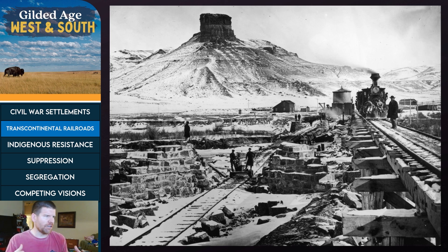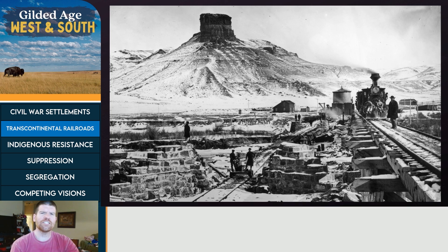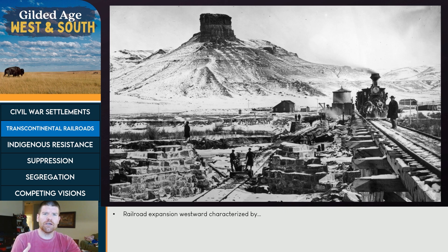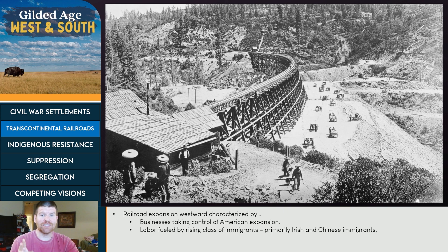We've had discussions about railroads going out West for some time — even back to Stephen Douglas and the Kansas-Nebraska Act. But it's following the Civil War where we finally have a railroad spanning the entire continent. The Transcontinental Railroad is defined primarily by the fact that businesses themselves are taking over the American expansion project going into the West. You're going to see these monopolies and businessmen in the East really develop a stronghold over the development of this Transcontinental Railroad.